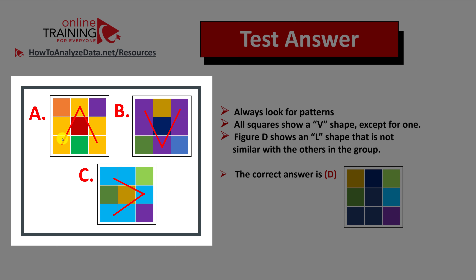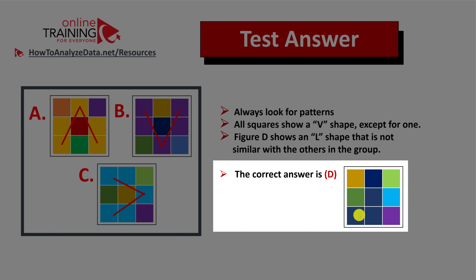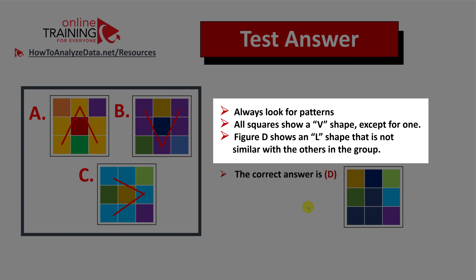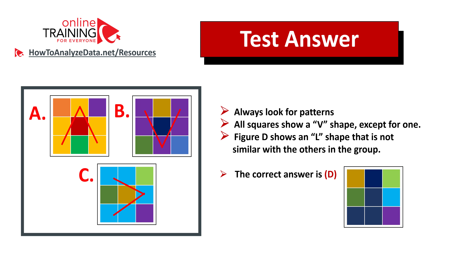In this case, you can see a V pattern. Choices a, b, and c all have V patterns in different dimensions, but choice d does not have a V pattern — it shows a reverted L shape, which is not similar to the others. So the correct answer is choice d.